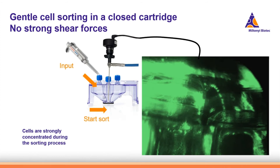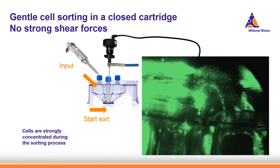Let's have a look at how the cells arrive in the positive collection chamber. An endoscope was inserted into the positive collection chamber, the cartridge was loaded, and sorting was started. We can see that the cells are easily flying into the positive collection chamber. Another advantage is that cells are strongly concentrated during the sorting process because the valve only opens for the short time the cell needs to be sorted, which can save you a centrifugation step.